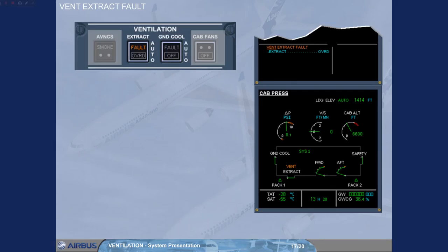Let's now simulate a vent extract fault. A failure message and associated ECAM procedure have appeared on the engine warning display. A fault light is on on the ventilation panel, and the ECAM CAB PRESS page has been automatically called to show amber vent indications. These are showing that there is a problem with the extract system. A low extraction airflow is detected through the extract valve.